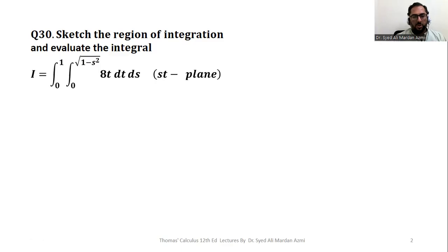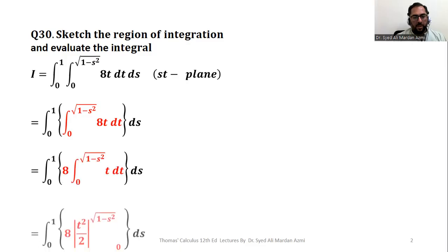For the purpose of solution, first of all, we will isolate the inner integral from the outer integral with the help of brackets and by changing its color. With respect to t, the integration of t will be t squared by 2. So we have the following expression.